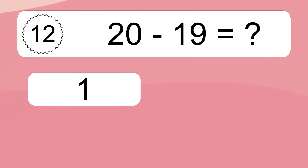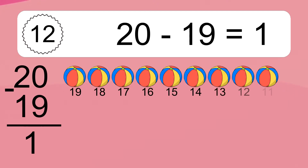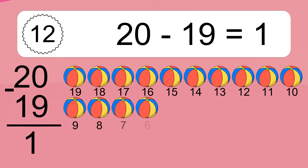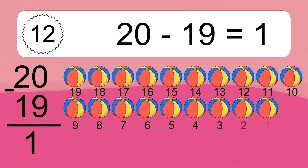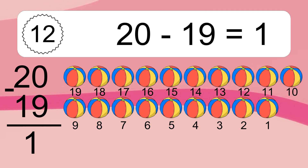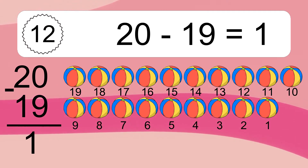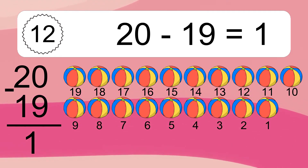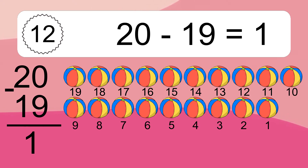20 minus 19 equals what? The answer is 1. Let's count it: 19, 18, 17, 16, 15, 14, 13, 12, 11, 10, 9, 8, 7, 6, 5, 4, 3, 2, 1.